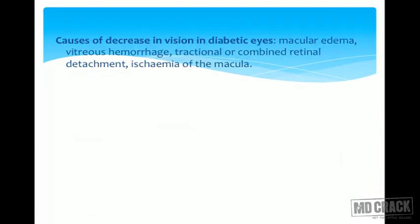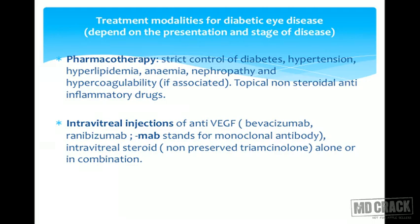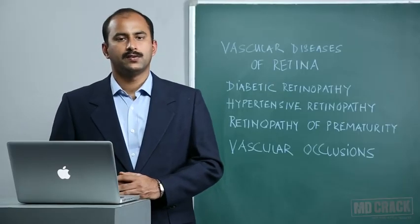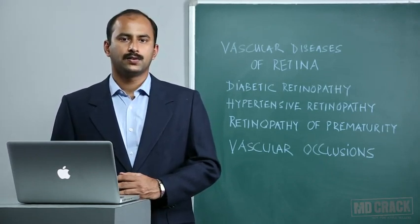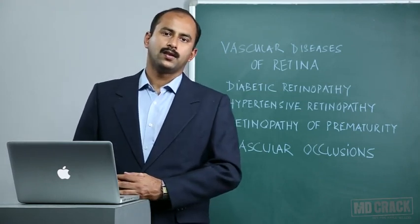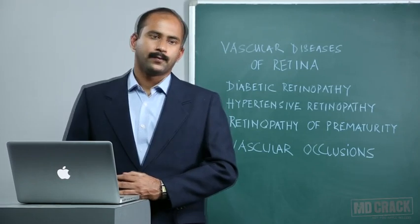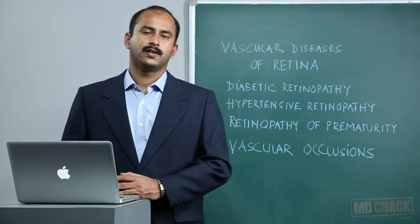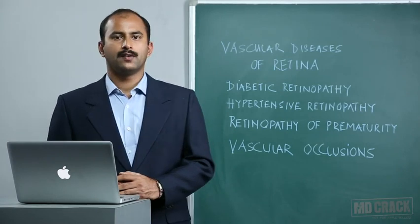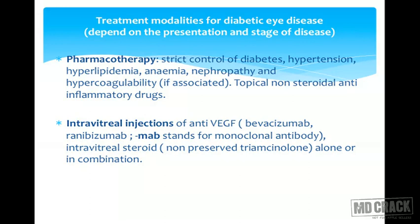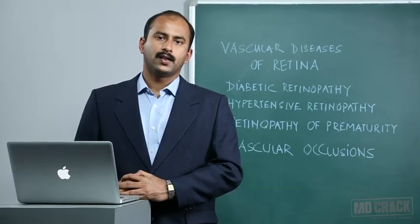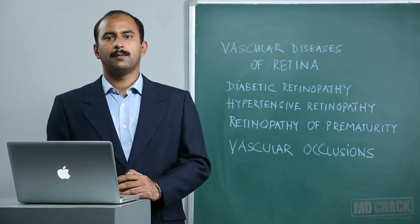The causes for decrease in vision in diabetic eyes are: macular edema (most important), followed by vitreous hemorrhage, tractional and combined retinal detachments, and ischemia of the macula. Treatment depends on the stage of the disease as classified by ETDRS. Therapy is absolutely necessary for high-risk type; early proliferative and severe non-proliferative retinopathy can be treated if patients will be lost to follow-up or have additional risk factors. Pharmacotherapy: glycemic control is the first step, and strict control of diabetes, hypertension, hyperlipidemia, anemia, nephropathy, and hypercoagulability is mandatory.